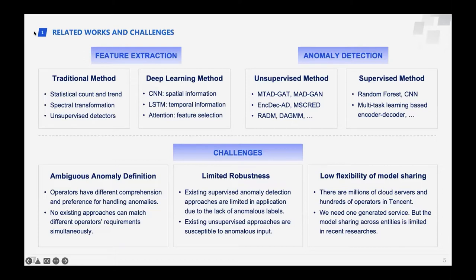However, even though many approaches have been proposed, directly applying them at large scale is still a challenge. The challenges arise in three aspects. First, ambiguous anomaly definition: operators usually have different comprehension preferences for handling anomalies, and no existing approaches can match their requirements. Second, limited robustness: existing supervised methods are limited due to lack of labeled anomalies, and unsupervised approaches are susceptible to anomalous input. Third, low flexibility of model sharing: there are millions of cloud servers and hundreds of operators in Tencent, requiring a generalized service, but model sharing across entities is limited.